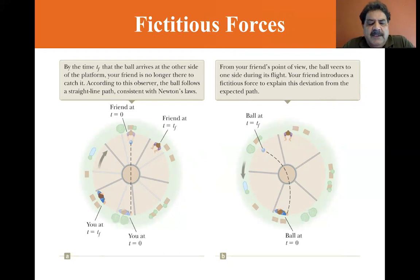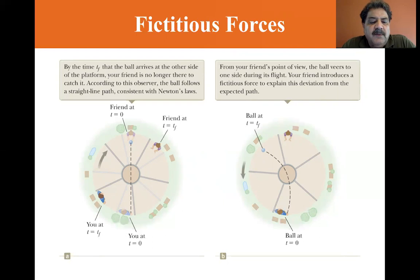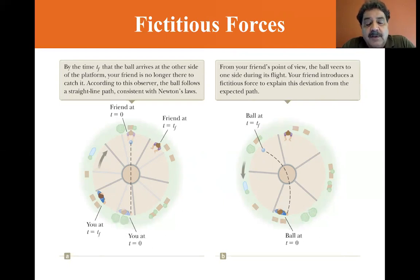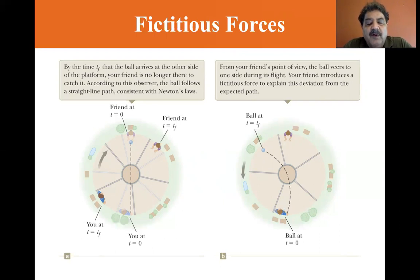Imagine you and a friend are on opposite sides of a rotating circular platform. You throw a ball to your friend. Figure A represents what an observer would see if the ball is viewed while the observer is at rest above the rotating platform. According to this inertial observer, the ball follows a straight line. At time t equals zero, you throw the ball. At time t final, when the ball has crossed the platform, your friend has moved to a new position and can't catch the ball.